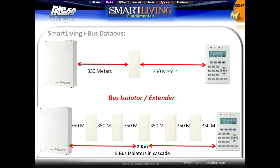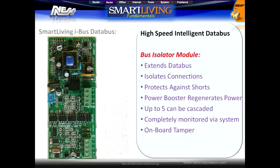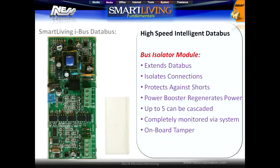It is possible to install up to five data bus isolators in cascade between any device and the main panel, and the panel will support a total of ten data bus isolators. The bus isolator modules both increase distance and isolate data bus branches, which is useful when running cables between buildings to protect against shorts bringing down the entire system. The onboard power booster regenerates power for long cable runs, and the module is also monitored by the system and can provide voltage feedback to the software.